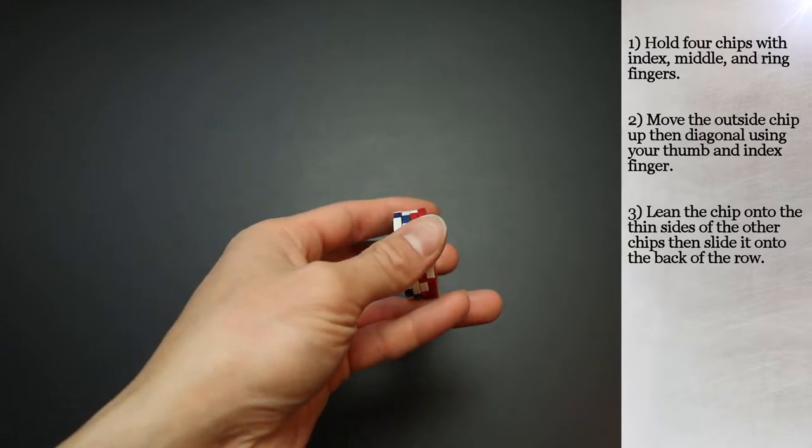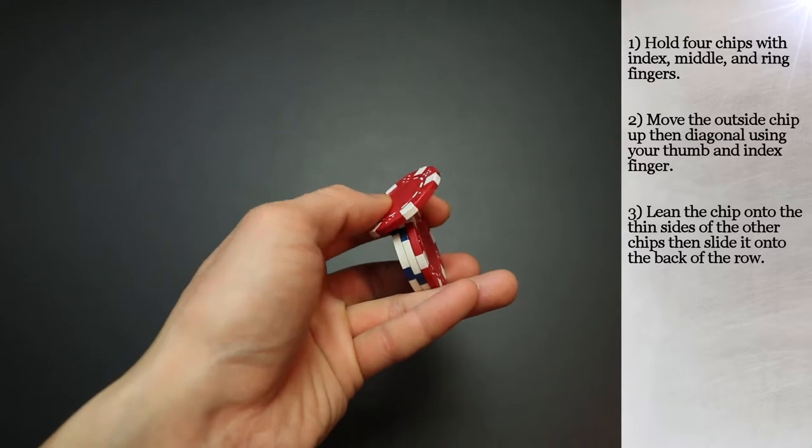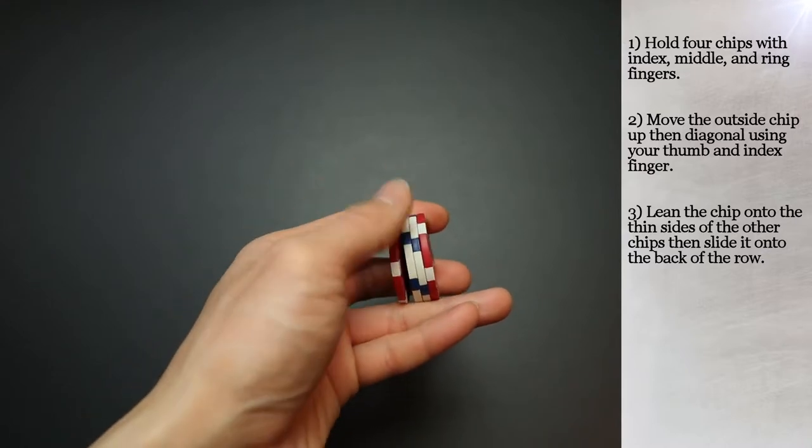The thumb will be the only finger that's actually moving, while the index finger is what the thumb is leaning the chip against.